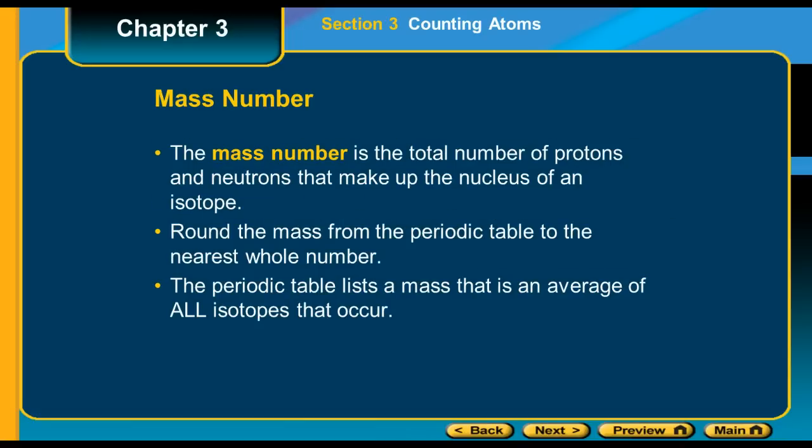The mass number is the total number of protons and neutrons that make up the nucleus of an isotope. For the periodic table, and for when we're calculating the number of protons and neutrons, we're going to round the mass from the periodic table to a whole number. And the periodic table will list a mass that is an average of all the isotopes. So we're going to round it to the nearest whole number, and that will tell us how many protons and neutrons are in the mass, and therefore also will be able to determine the number of electrons.